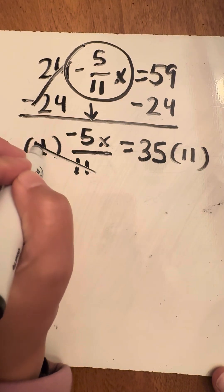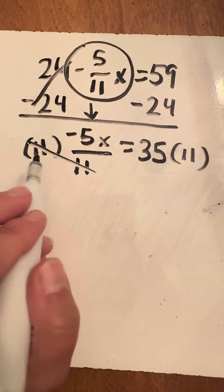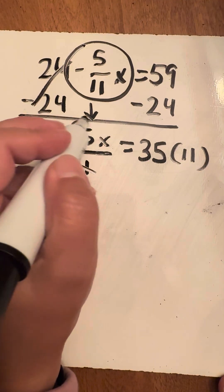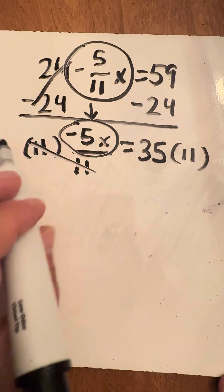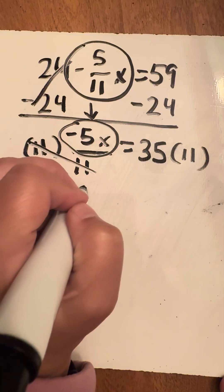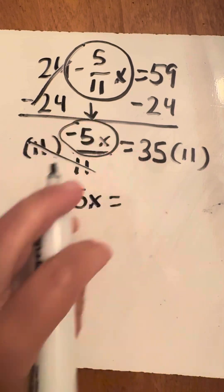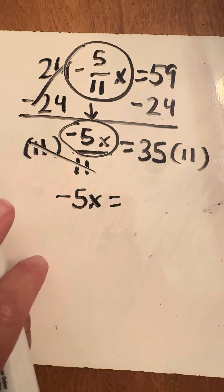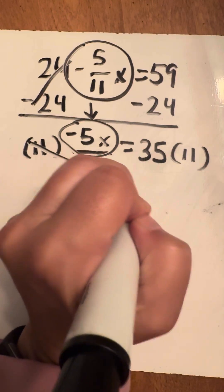Now the 11s are going to cancel. That's going to leave me with that being one, which means you're just left right here with this, which is a negative 5x. And then over here, we've got 35 times 11, and that's going to be 385.